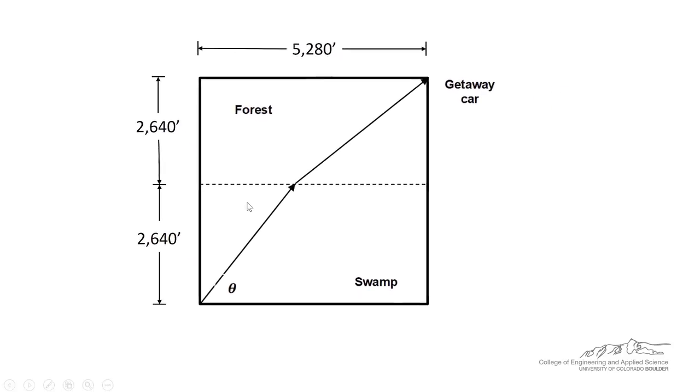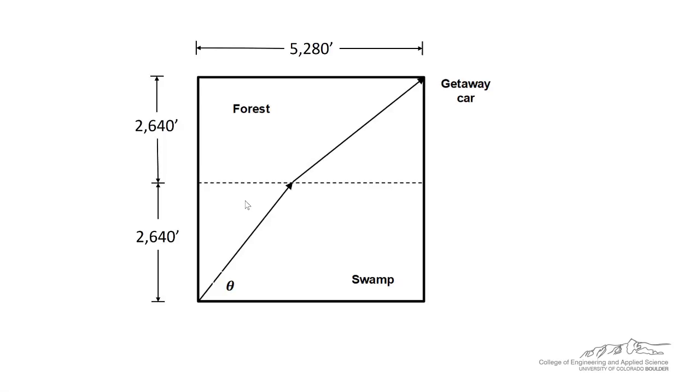Let's go through another somewhat creative example. For example, you have just escaped from prison. So you are right here at this 0-0 position. And you've got a getaway car waiting for you that's one mile north and one mile east of where you are. You've got a swamp that you have to travel through and you can only go 2 feet per second through the swamp.